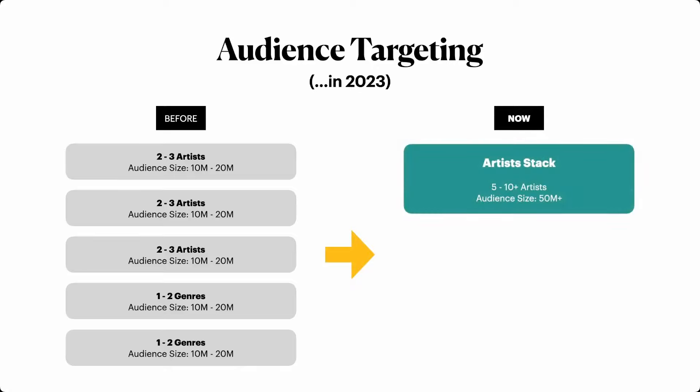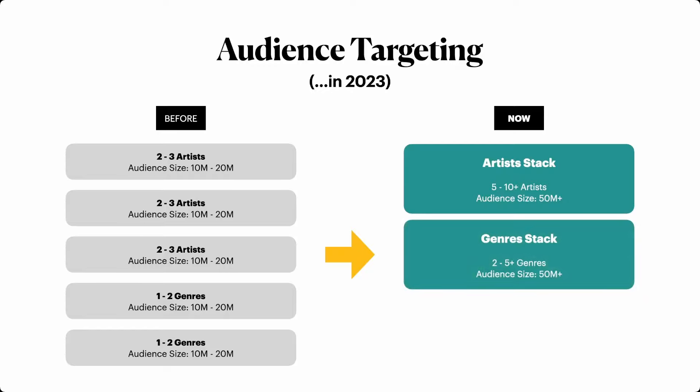The way things are moving now is a lot simpler. Instead of having multiple different ad sets with just a couple of artists, you can now create a simple artist stack — one ad set with all of the possible relevant artists, with an audience size of maybe 50 million plus, and you just throw them all in there. Similarly with genres, instead of breaking them up into a bunch of different ad sets, you can just throw all the relevant genres into one genre stack ad set with a much larger audience size.